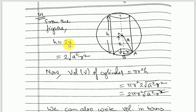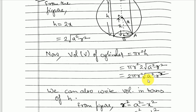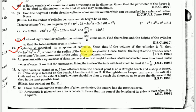From the figure, h equals 2x. Using the Pythagorean theorem, x equals √(a² − r²), so h equals 2√(a² − r²). The volume of a cylinder is given by πr²h, so substituting for h, the first part is done: v equals 2πr²√(a² − r²), as required by the question.